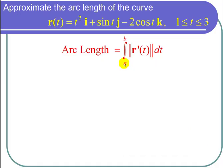So the arc length formula states that the arc length is equal to the integral from a to b of the magnitude of R prime of t dt.